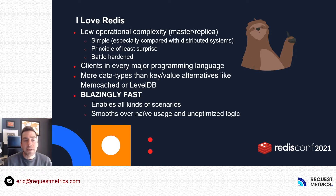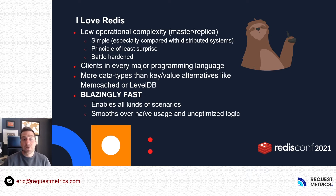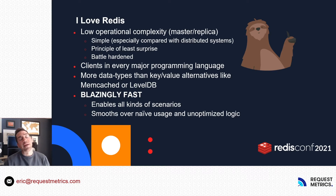Before we get into more details, I want to talk about why I love Redis. As a business founder and the chief tech person at these businesses, when the pager goes off, it's my job to fix whatever's wrong. And one of the things I love about Redis is that Redis almost never causes the pager to go off. It has very low operational complexity and overhead. It rarely surprises, and it's battle-hardened. Other things I like about Redis are that almost any programming language can talk to it. There's a lot of flexible data types. And perhaps most importantly, Redis is blazing fast.